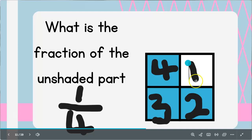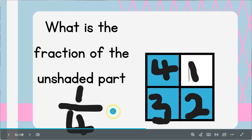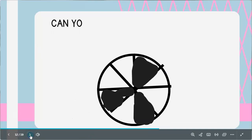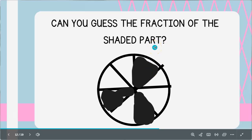Now what is the fraction of the unshaded part? The biscuit is divided into four parts, and I was given just one of the unshaded parts, meaning one out of four. What do we call one over four in fraction form? Good job — it's called one quarter. Now can you guess the fraction of the shaded parts in the next shape?